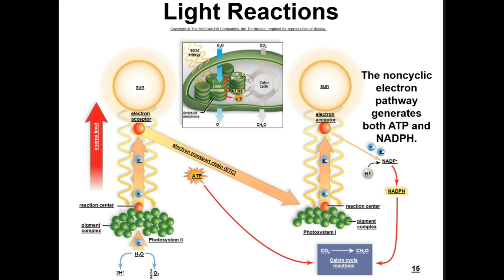Light energy striking photosystem I is captured by its pigment molecules and funneled to a chlorophyll A molecule in the reaction center, ejecting an energized electron that is picked up by the primary electron acceptor of photosystem I. Through this process we are generating ATP energy molecules and collecting electrons and protons through NADP+ to become NADPH. The ATP and NADPH created in the light reactions will later be used in the dark reactions to make the carbohydrate.